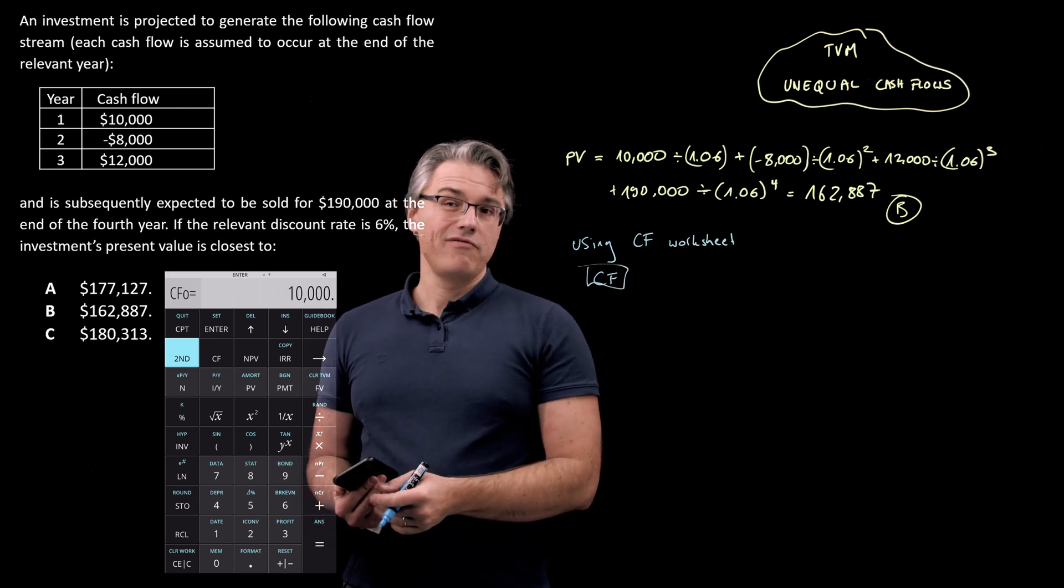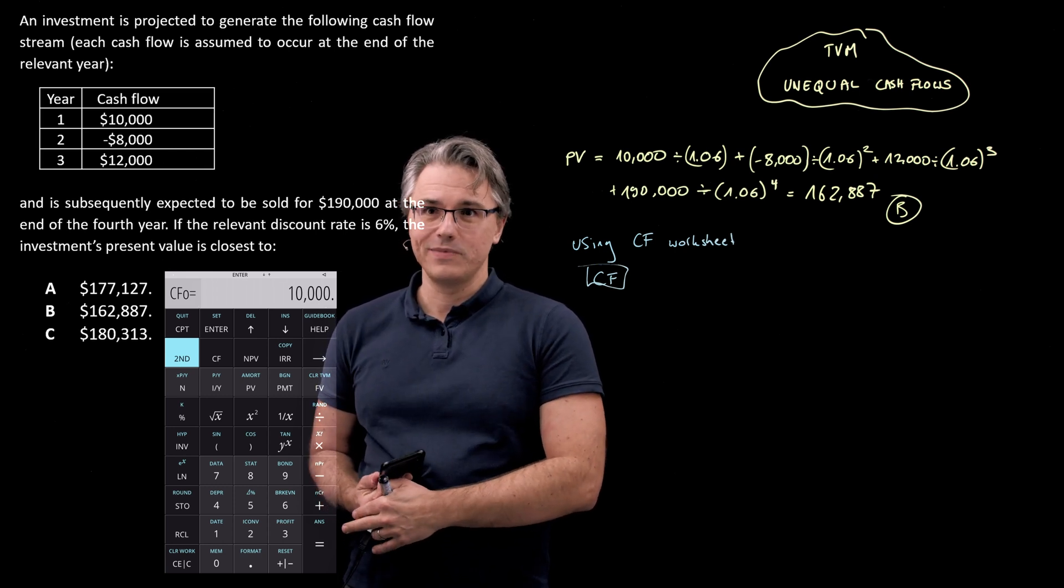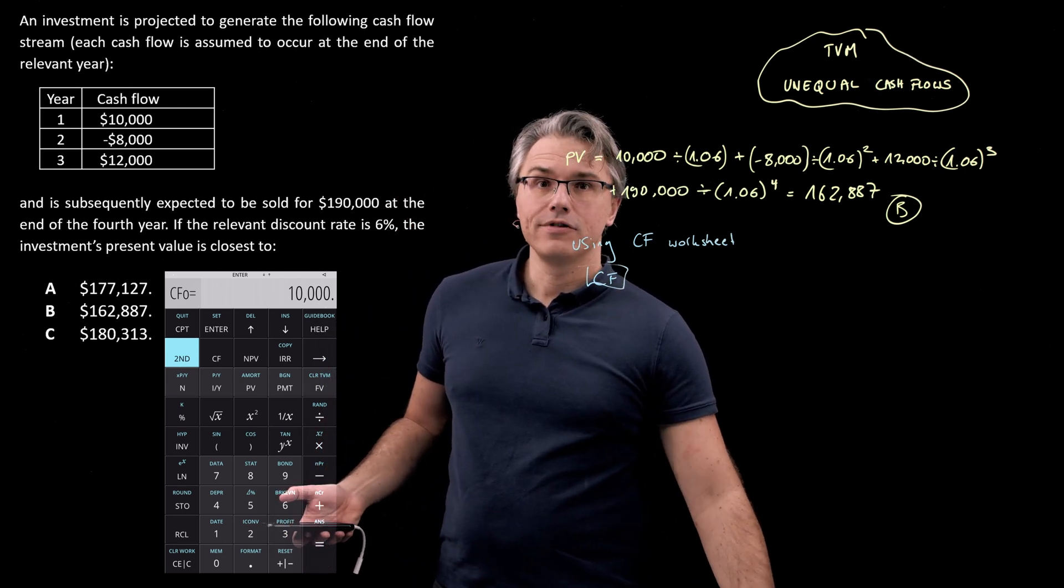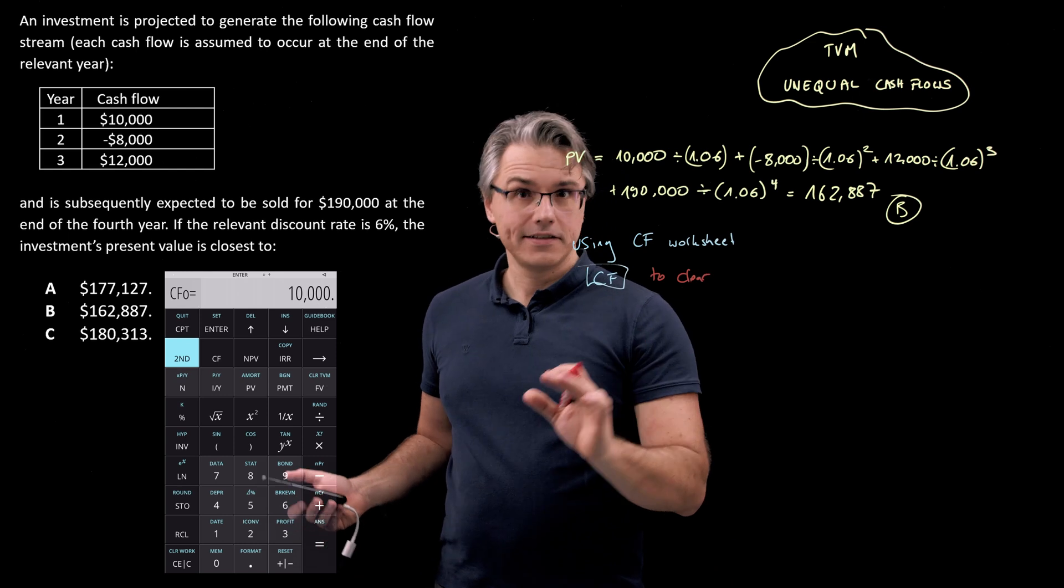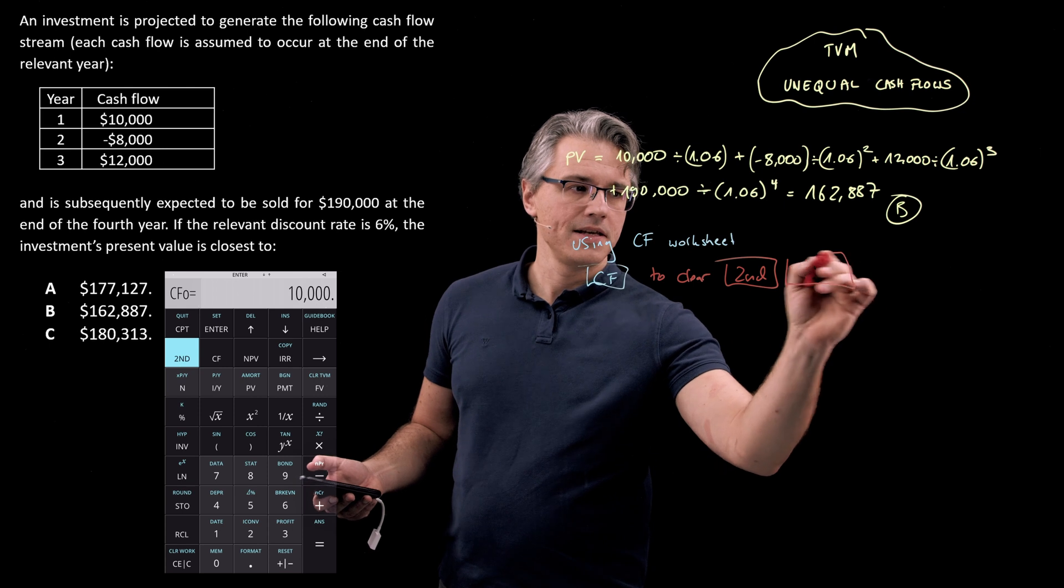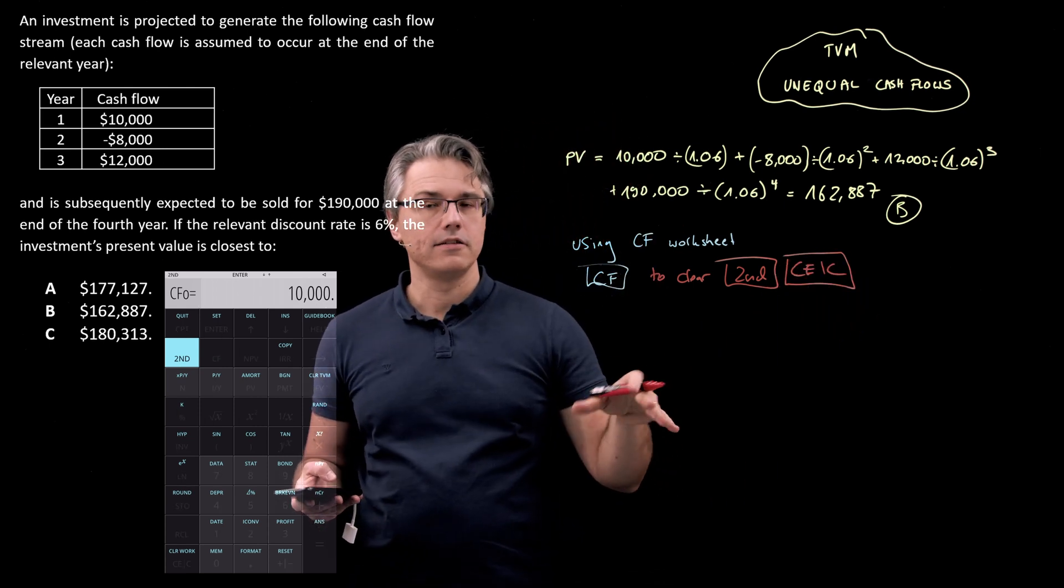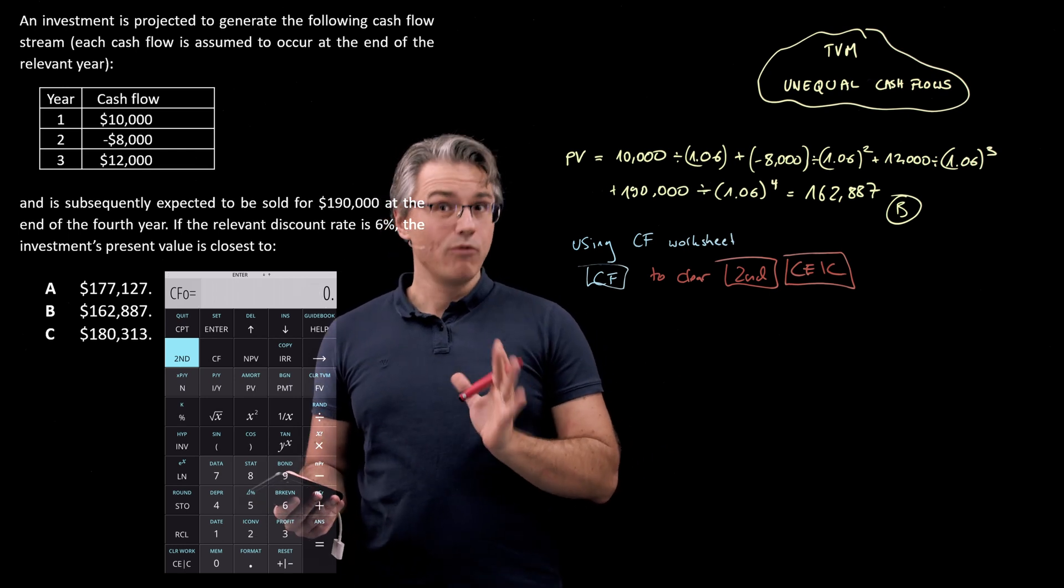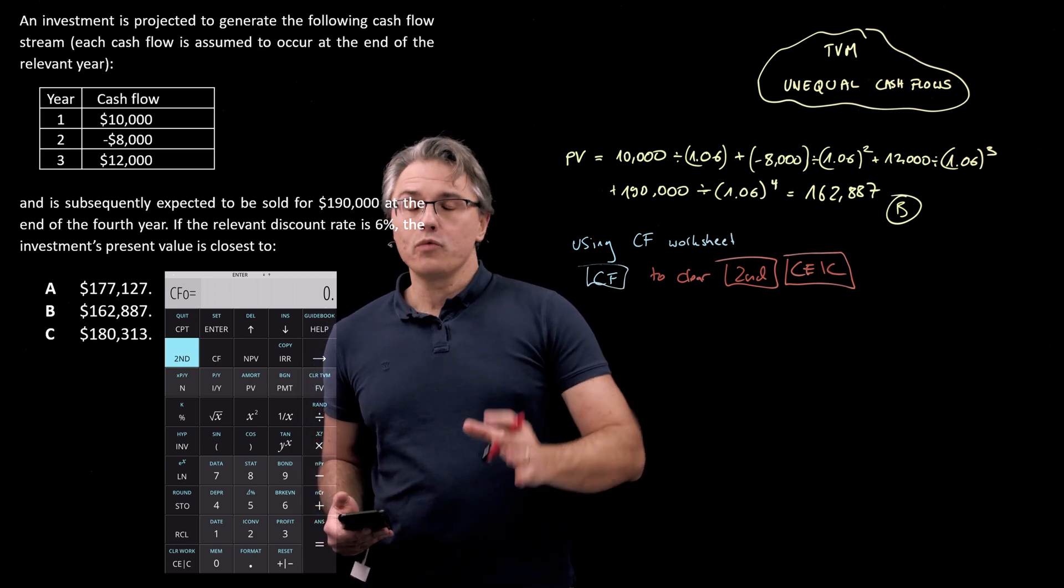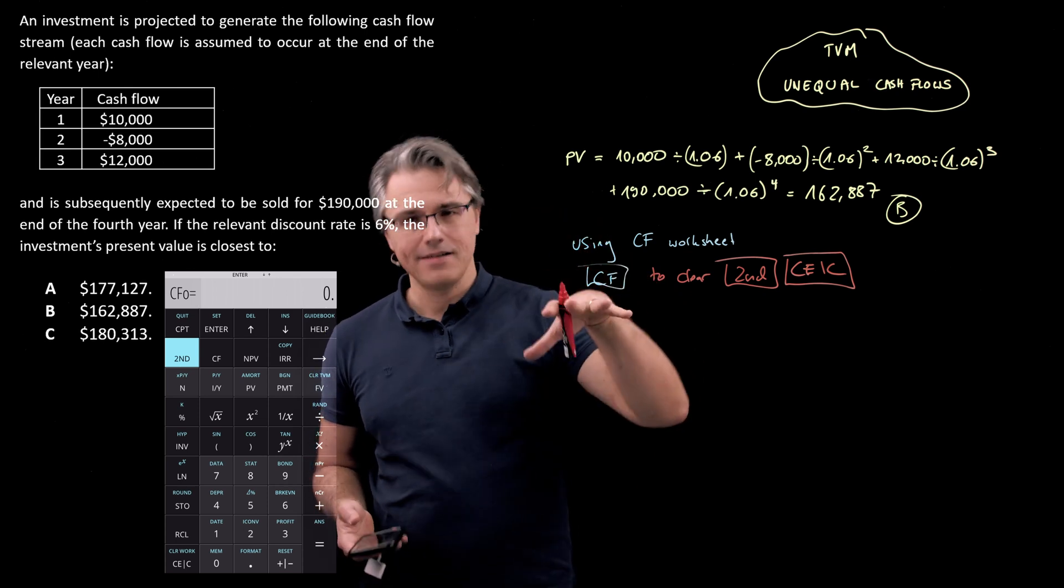As you can see, I've got something there already, I guess, from a previous question that I was doing. And the first thing you want to be able to do is potentially just clear this worksheet. So in order to clear it of any data which may be sitting there, press second, followed by the C, E, C key, which is at the very bottom of your calculator keys on the left-hand side. And it's got clear work as its secondary function.